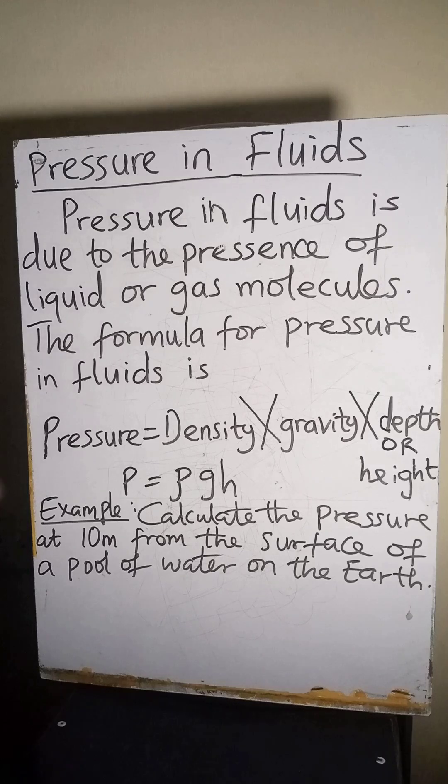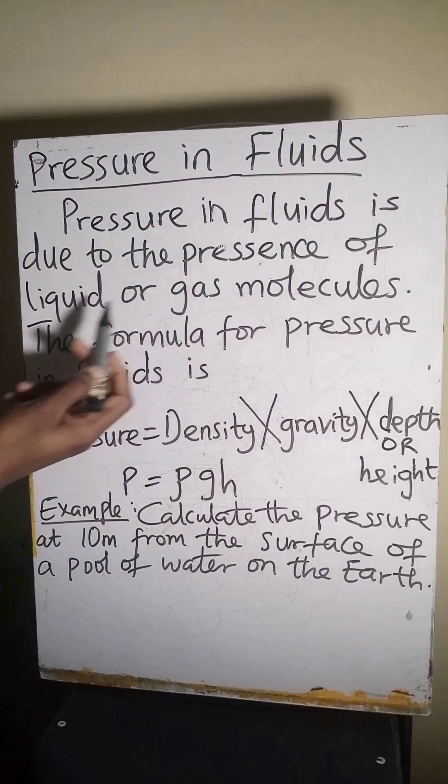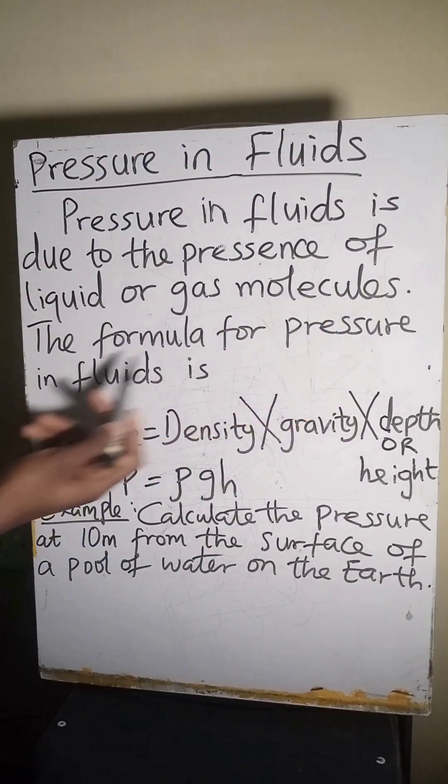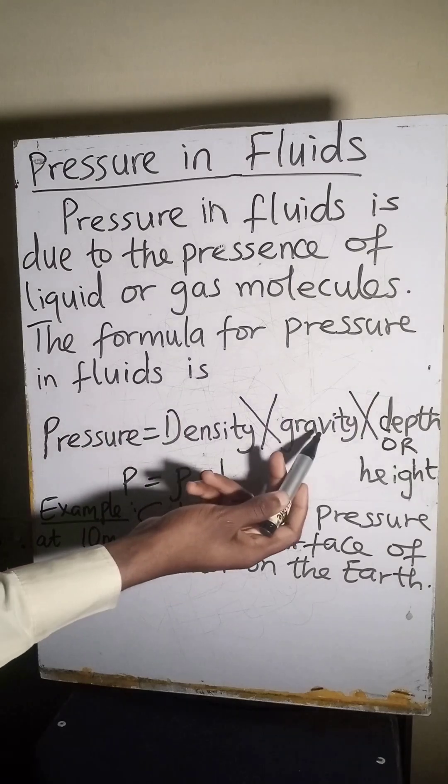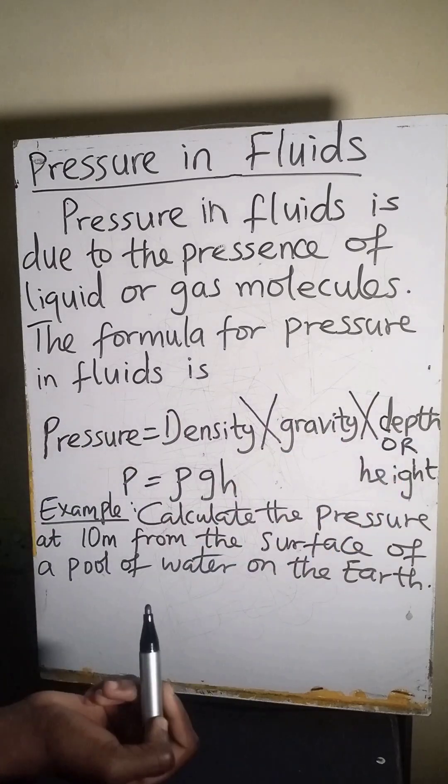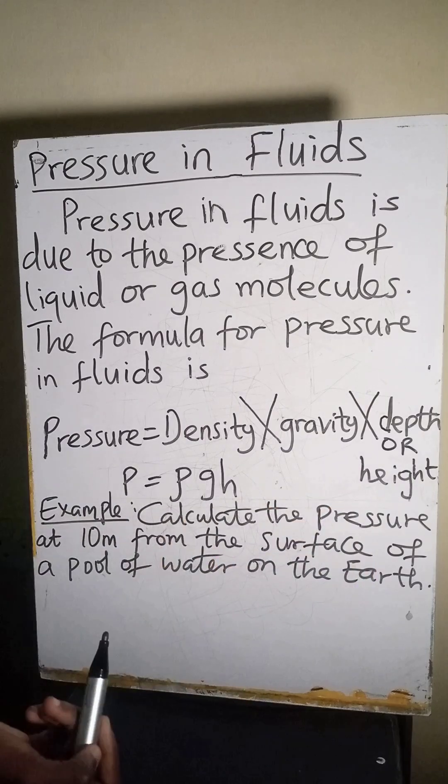Pressure in fluids. Pressure in fluids is due to the presence of liquid or gas molecules. The formula for pressure in fluid is density multiplied by gravity multiplied by depth, or you call it height. Hence, density times gravity times height.